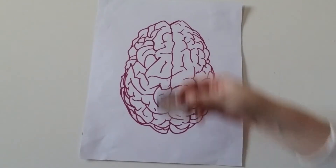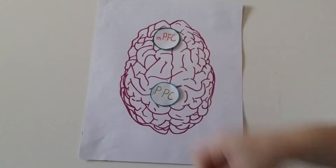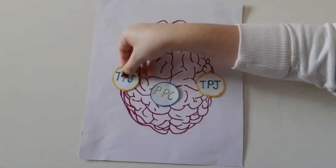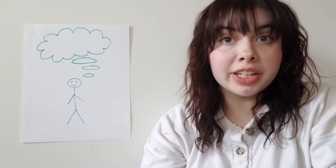The medial prefrontal cortex, the posterior parietal cortex, and the temporoparietal junctions are all nodes that activate when we're at resting state. Our bodies default to this pattern of activation when we aren't doing much else. But why do we have the default mode network? What are our brains doing that we aren't aware of? Our brains are active because at resting state, we let ourselves get lost in thought. Whenever you find yourself daydreaming or your mind wandering, your default mode network is being activated.